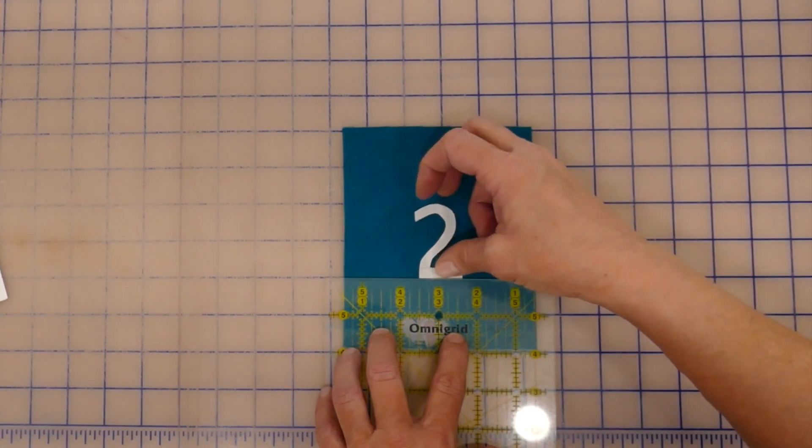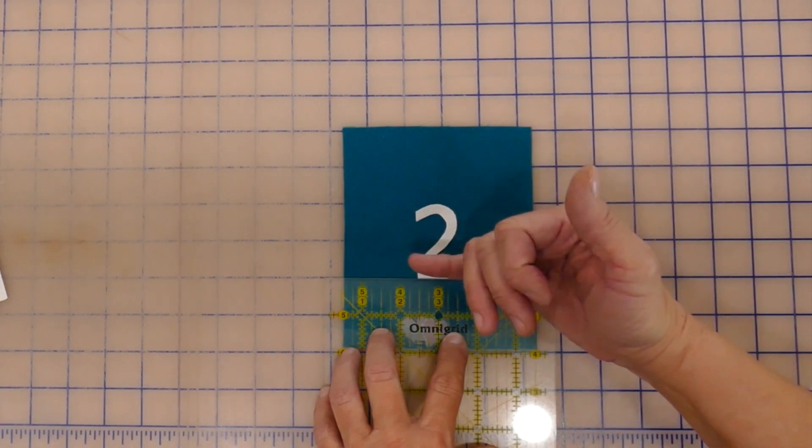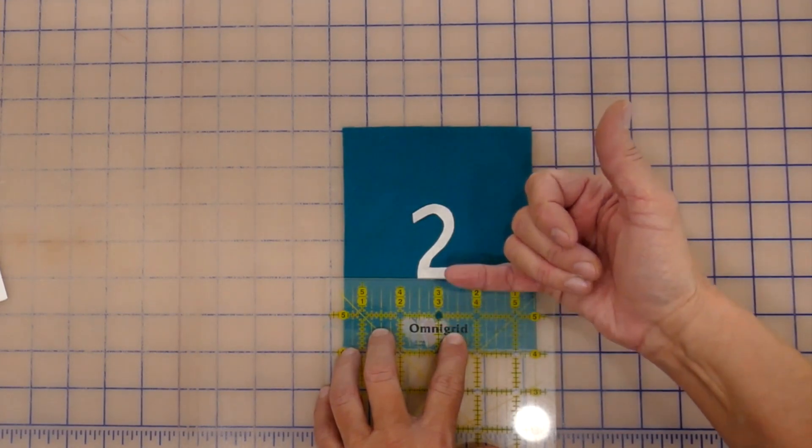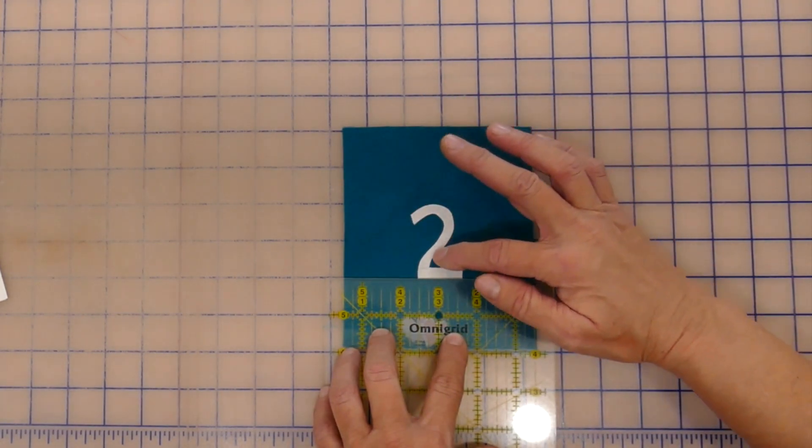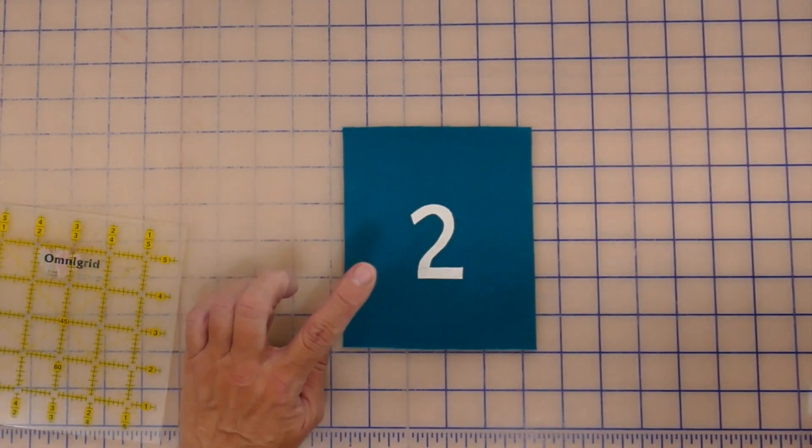and just butt it right up against this straight edge, so it has something that it's hitting. So I know that that bottom part is straight. I've centered it with this center line, and there you go. That is a fast, easy way to get that lined up.